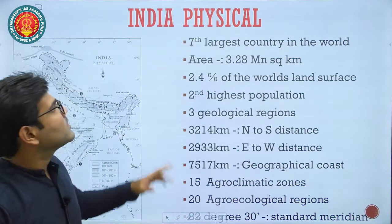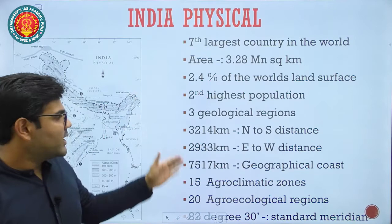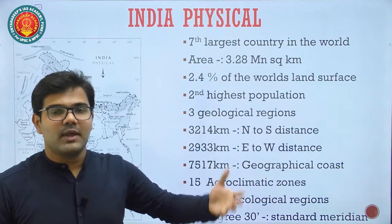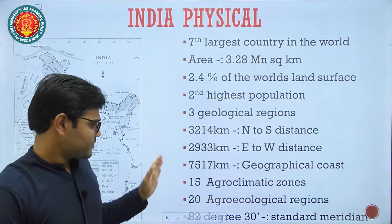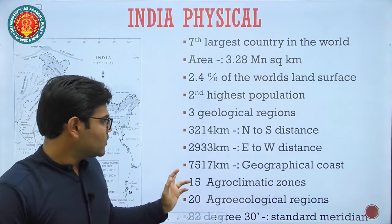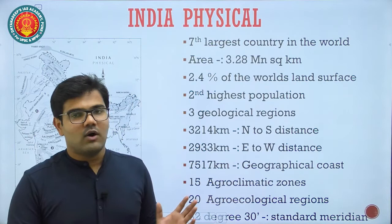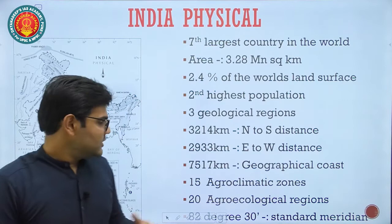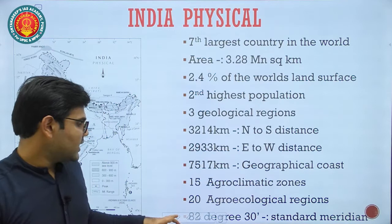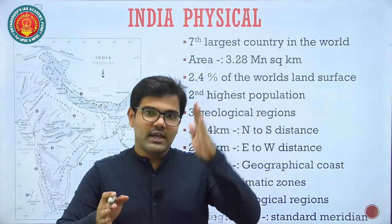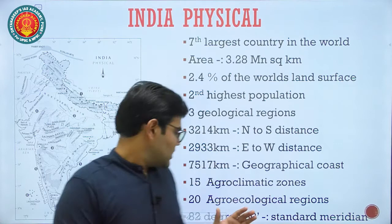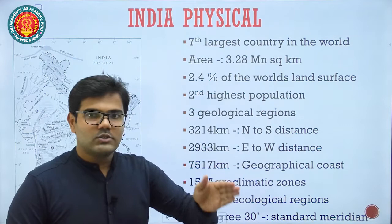For India's physical geography: India is the seventh largest country in the world by area and second largest by population. The north-south extent is 3,214 km. The coastline is 7,517 km. There are 15 agro-climatic zones and 20 agro-ecological zones. The standard meridian is 82°30' East — this is the meridian from which we decide India's time relative to the Greenwich Meridian.